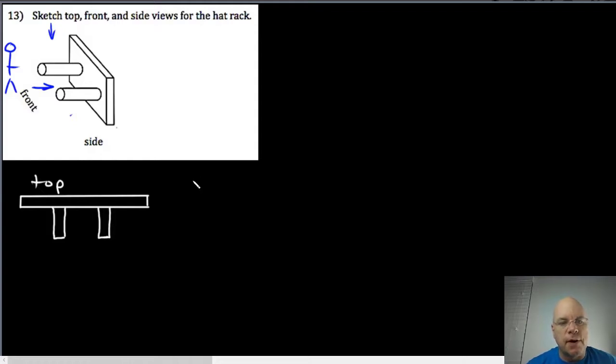The front view—now we're looking directly at the object, so that board would just look like this big rectangle, and the two pegs would just look like circles here and here.